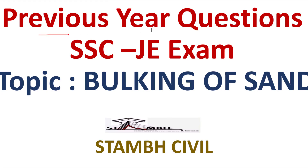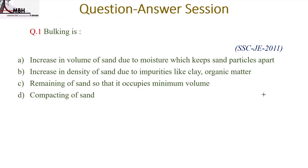Today I am going to discuss previous year questions of SSC JE exam on the topic of bulking of sand. The first question is: bulking is — option A: increase in volume of sand due to moisture which keeps sand particles apart; option B: increase in density of sand due to impurities like clay or organic matter; option C: remaining of sand so that it occupies minimum volume; option D: compacting of sand. This is a 2011 question. Bulking is increase in volume of sand due to moisture content which keeps sand particles apart. So the correct option is A.